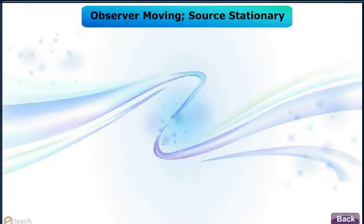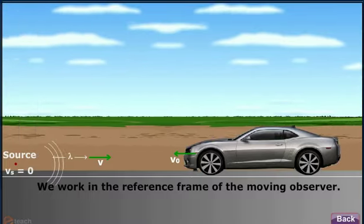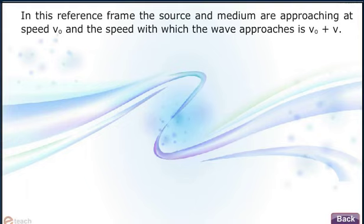Observer moving, source stationary: We work in the reference frame of the moving observer. In this reference frame, the source and medium are approaching at speed V0 and the speed with which the wave approaches is V0 plus v.